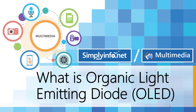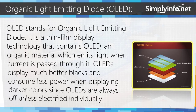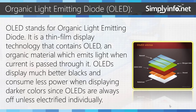What is Organic Light Emitting Diode? OLED stands for Organic Light Emitting Diode. It is a thin film display technology that contains an organic material which emits light when current is passed through it. OLEDs display much better blacks and consume less power when displaying darker colors, since OLEDs are always off unless electrified individually.